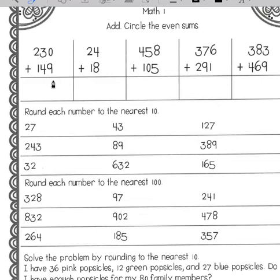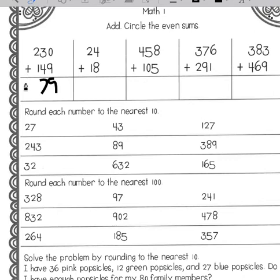We're going to start over here: nine plus zero is nine, four plus three is seven, and two plus one is three, so this one would be 379. Over here I have eight plus four, which is 12.